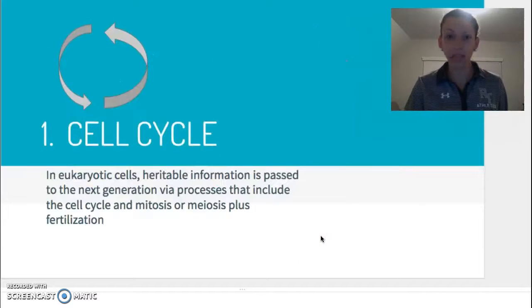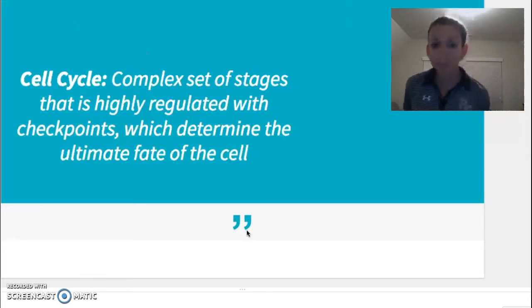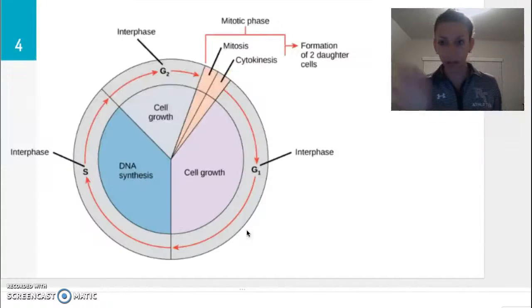Now, in eukaryotic organisms, the cell cycle is very important. Heritable information is passed to the next generation via processes that include the cell cycle and mitosis or meiosis plus fertilization. So this is how we get our genetic information transferred from organism to organism and how we get the same DNA in all of our cells in our entire bodies. From your AP guide, it says that the cell cycle is a complex set of stages that is highly regulated with checkpoints which determine the ultimate fate of the cell.